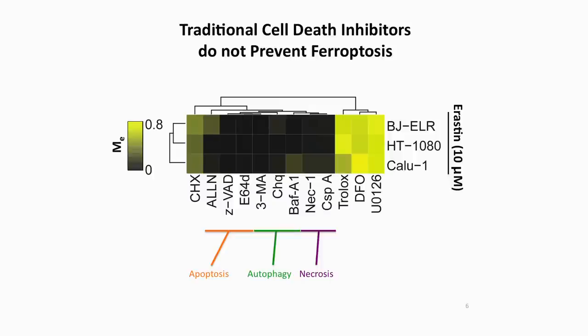The next thing we wanted to do was examine whether any of the inhibitor sensitivities of Erastin-treated cells were similar to cells treated with other inducers of cell death. What we discovered was that traditional inhibitors of apoptosis, autophagy, and necrosis did not prevent Erastin-induced death. On the other hand, Erastin-induced death was strongly suppressed by iron chelators and antioxidants, indicating that this was an iron-dependent oxidative form of cell death.